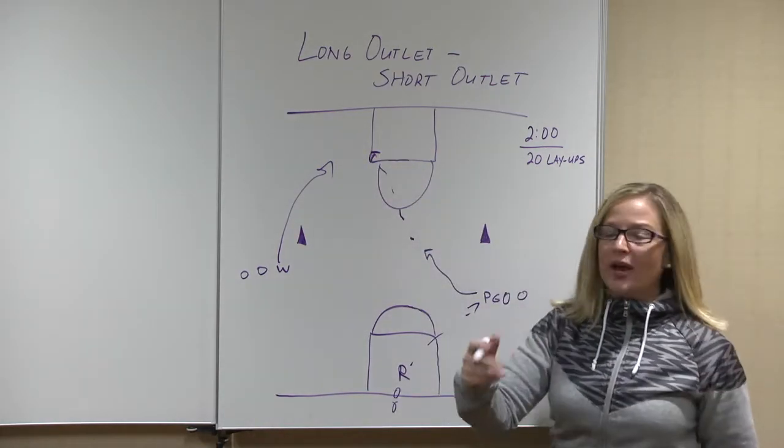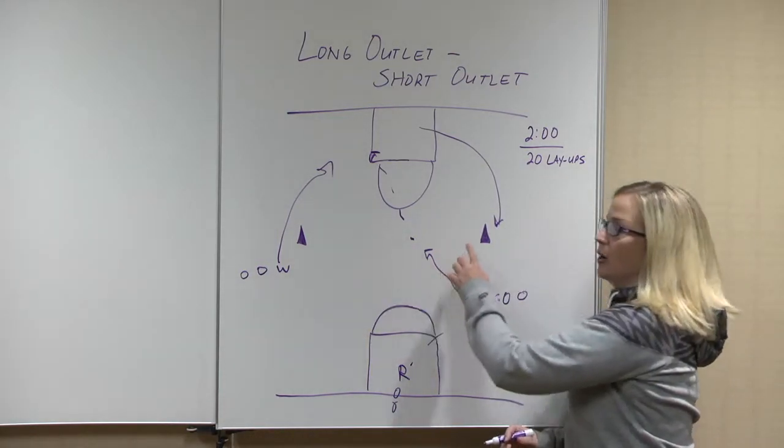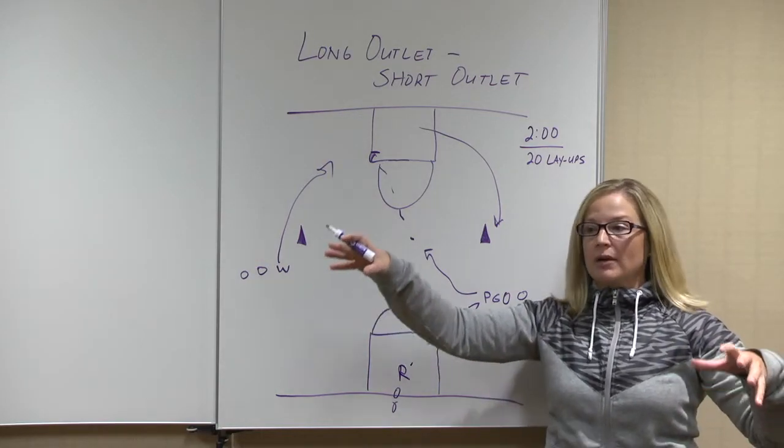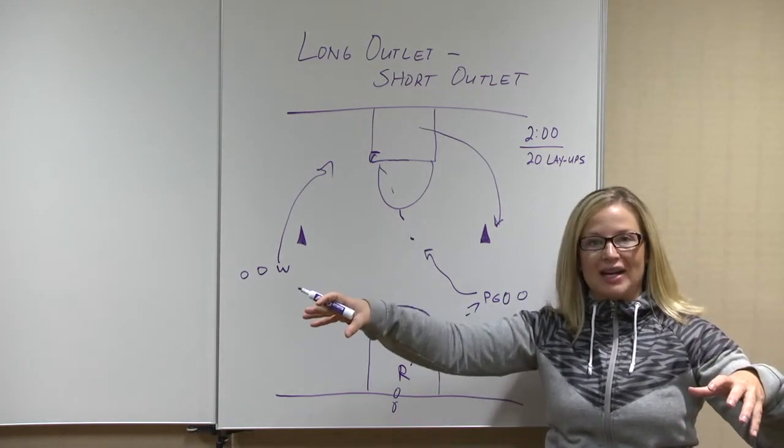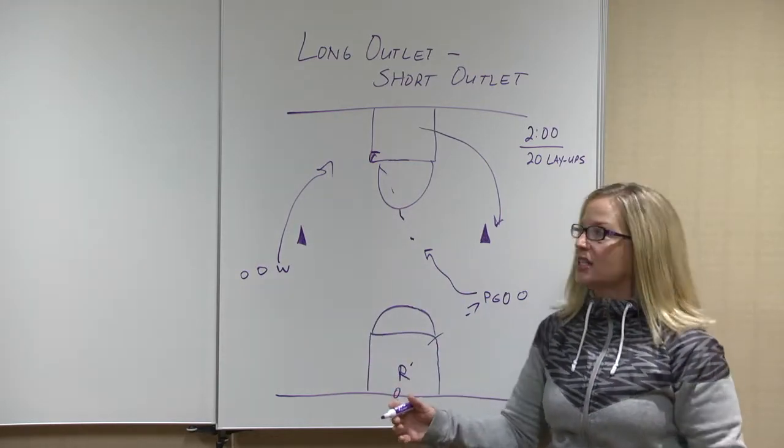After the layup, the wing must immediately come down the opposite side. Now we use the cones here and we typically put that on where the volleyball poles would be. There's those circles right there in half court because that really makes those wings run incredibly wide and it teaches that skill.